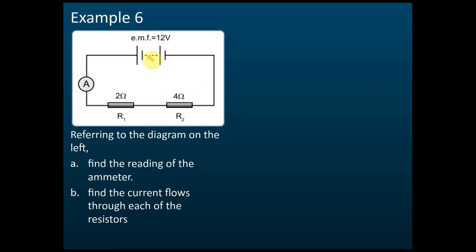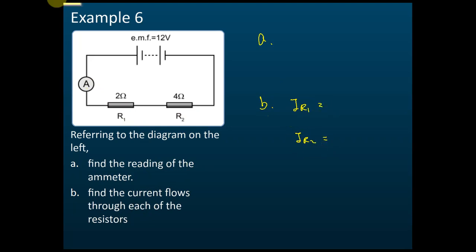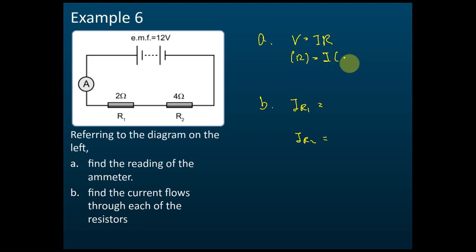Example 6: they want us to find the readings of the ammeter and the current through each resistor. For part A, using V = IR with V = 12 volts and R = 2 + 4 = 6 ohms, the current I = 2 amperes. For part B, since this is a series circuit, the current through each resistor is also the same — 2 amperes through R1 and 2 amperes through R2.